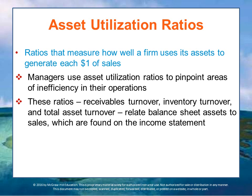Similarly, managers can use asset utilization ratios to pinpoint areas of inefficiency in their operations. Examples include receivables turnover, inventory turnover, and total asset turnover. These ratios relate balance sheet assets to sales, which are found on the income statement.